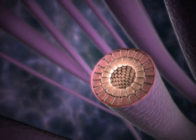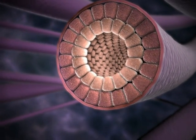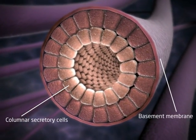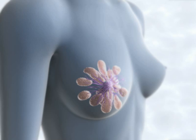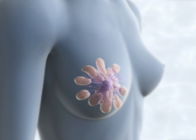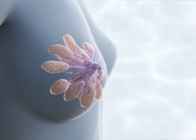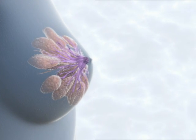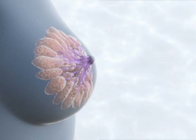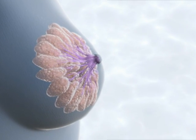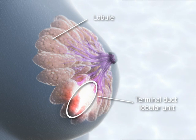The ductal system is lined by one or two layers of columnar secretory cells and a basement membrane. With the onset of ovarian function, the breast matures and the ends of the ducts differentiate into secreting alveoli or acini, forming lobules and the terminal duct lobular unit.